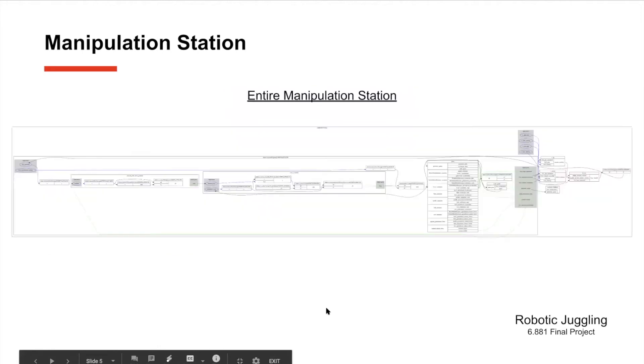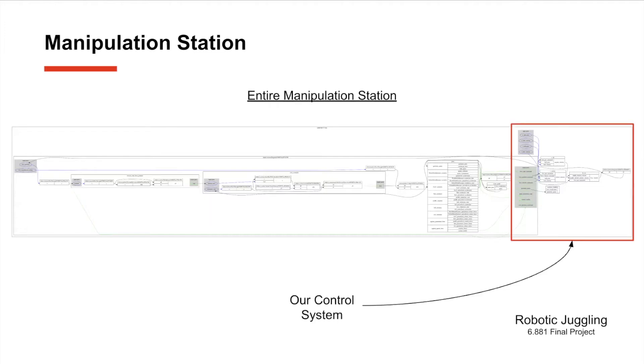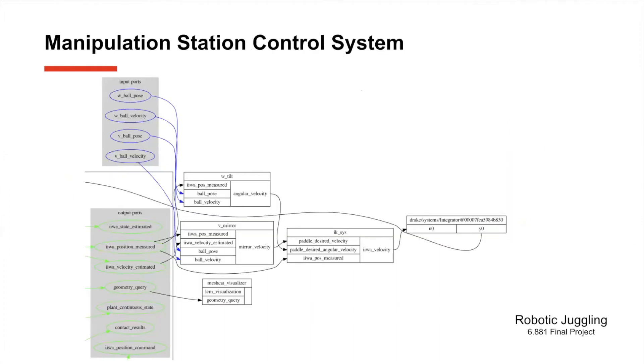So here we can see our entire system diagram. This includes the manipulation station which has the arm and the arm's internal controller, the arm input and output ports, and then our external systems that do the different calculations for desired velocities and the differential inverse kinematics and so on. We can't really read this so let's zoom in and take a closer look. Here in the bottom left we see the output ports of the Kuka Iwa. This includes the position and the estimated velocity of the robot arm as well as other information about the simulation. Mainly the information about the simulation that we use is the ball pose and the ball velocity.